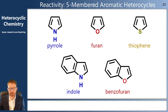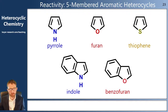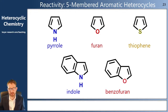Hello and welcome to this video about heterocyclic chemistry. In this video we're going to look at the reactivity of some five-membered aromatic heterocycles: things like pyrrole, the five-membered aromatic heterocycle containing nitrogen; furan, the five-membered heterocycle containing oxygen; thiophene, a five-membered heterocycle containing sulfur; and their carbon-fused analogs.